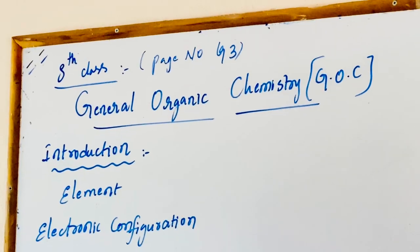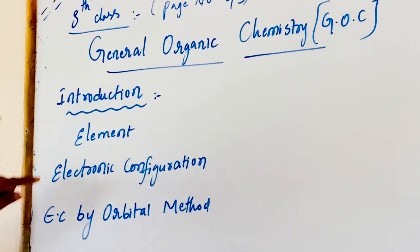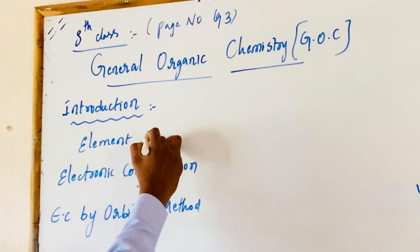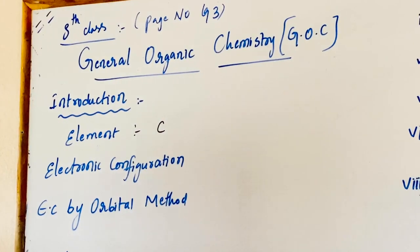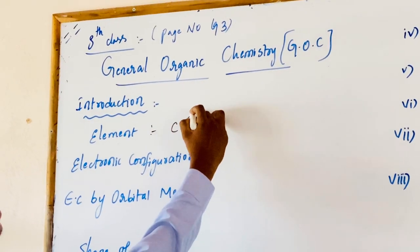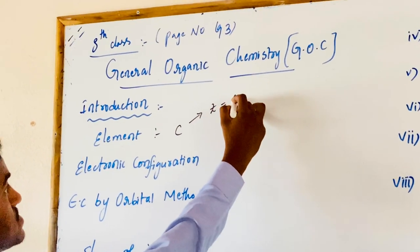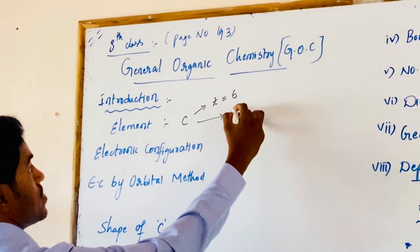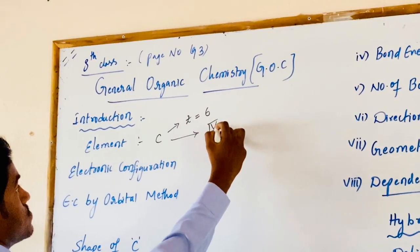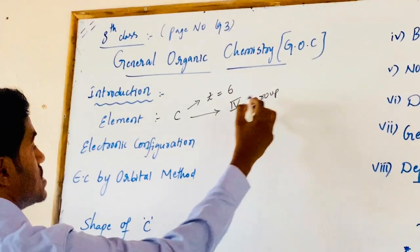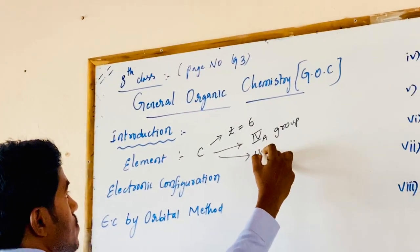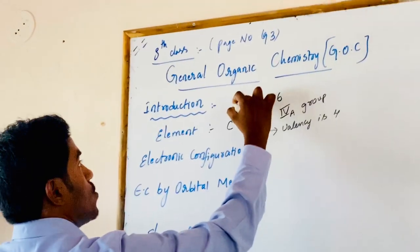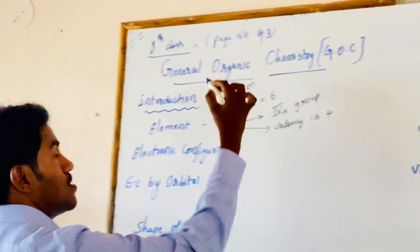Coming to the introduction of the chapter, the key element in organic chemistry is carbon. Carbon's symbol is C, its atomic number is 6, and it is present in the 4th period. Its valency is 4, and moreover, carbon is a non-metal.